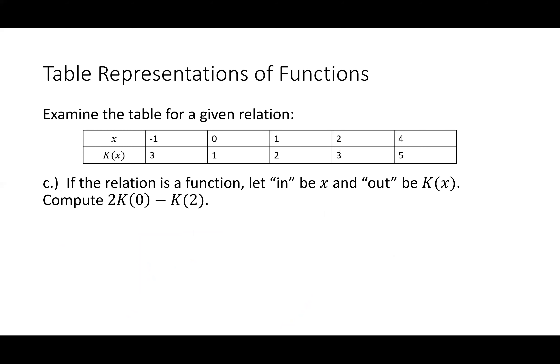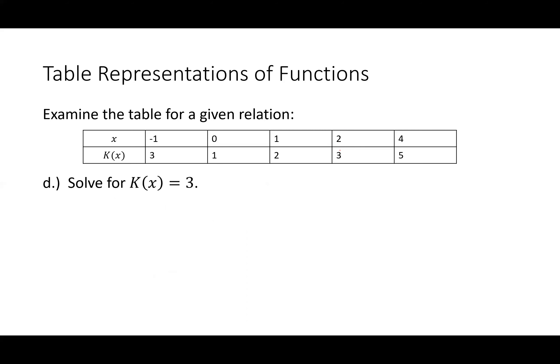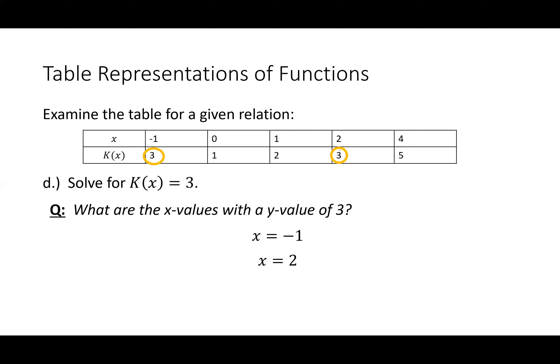If we let n be x and out be k(x), we'll compute 2·k(0) − k(2). We start by computing k(0): the output for 0 is 1, so 2·k(0) = 2. Now k(2) = 3. So this is just a saucy way to ask what's 2 − 3, which is negative one. Now let's solve for where y = 3: what inputs give an output of 3? Looking at k(x), the x values with y = 3 are x = −1 and x = 2.